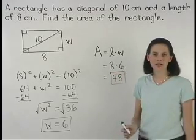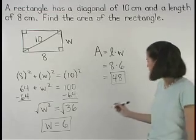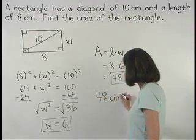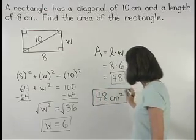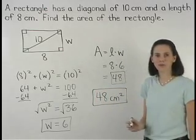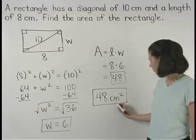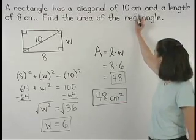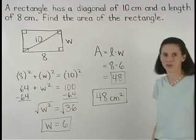So the area of the rectangle is 48 square centimeters. Notice that we include square centimeters in our final answer because we were given centimeters as our units in the original problem.